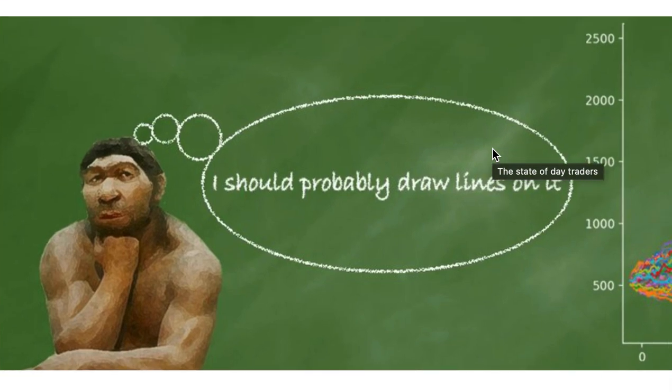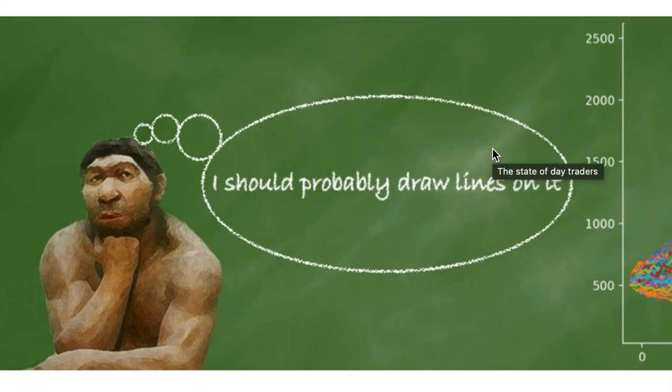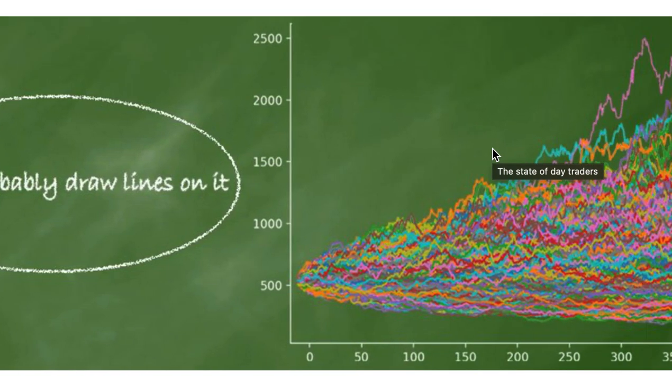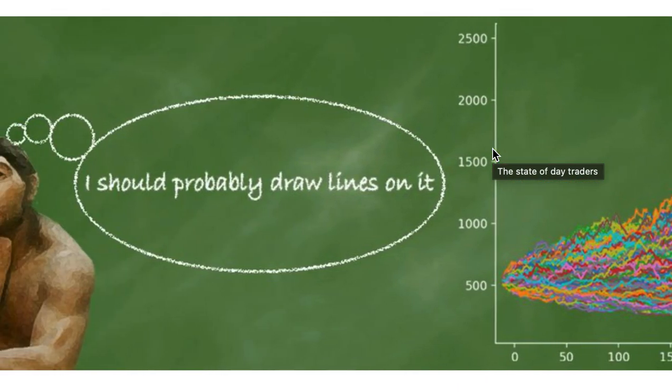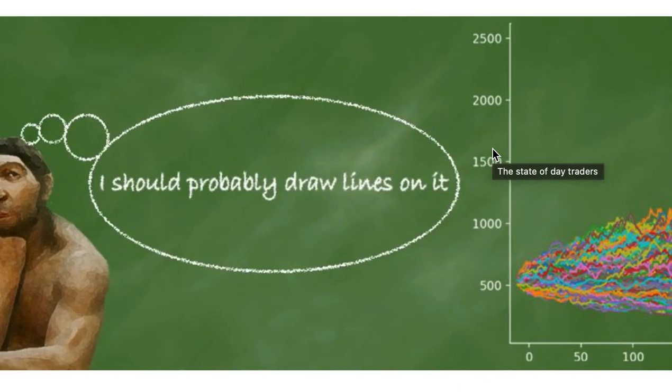It's like an ancient human being, very retarded or low IQ. You can see he said 'I should probably draw lines on it.'